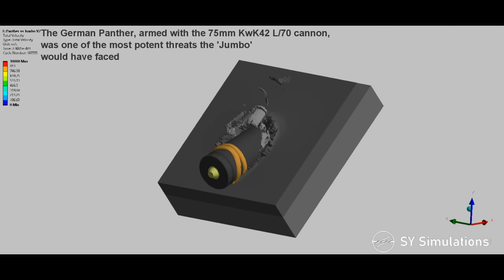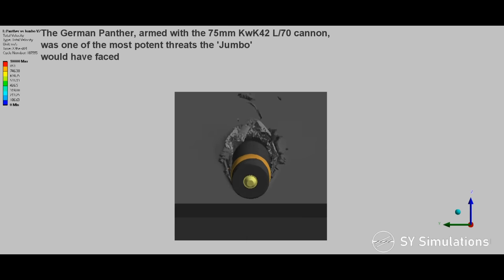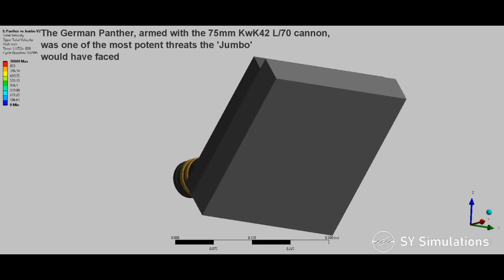The German Panther, armed with the 75mm KWK-42L70, was one of the most potent threats the Jumbo would have faced.